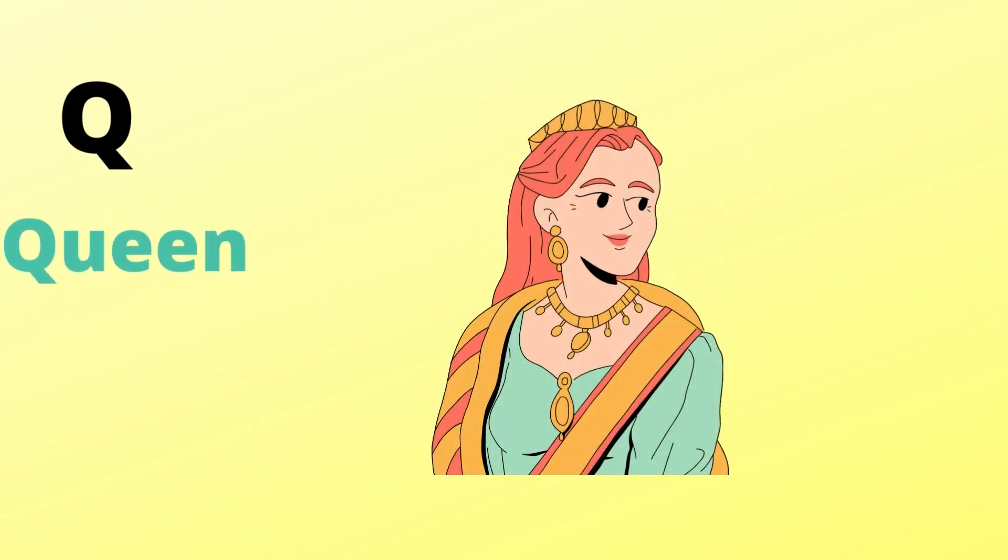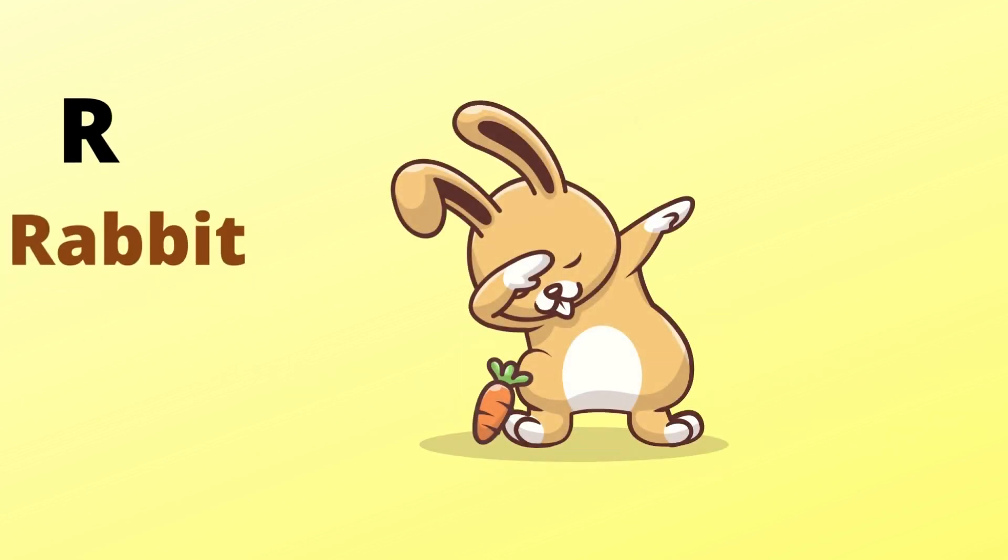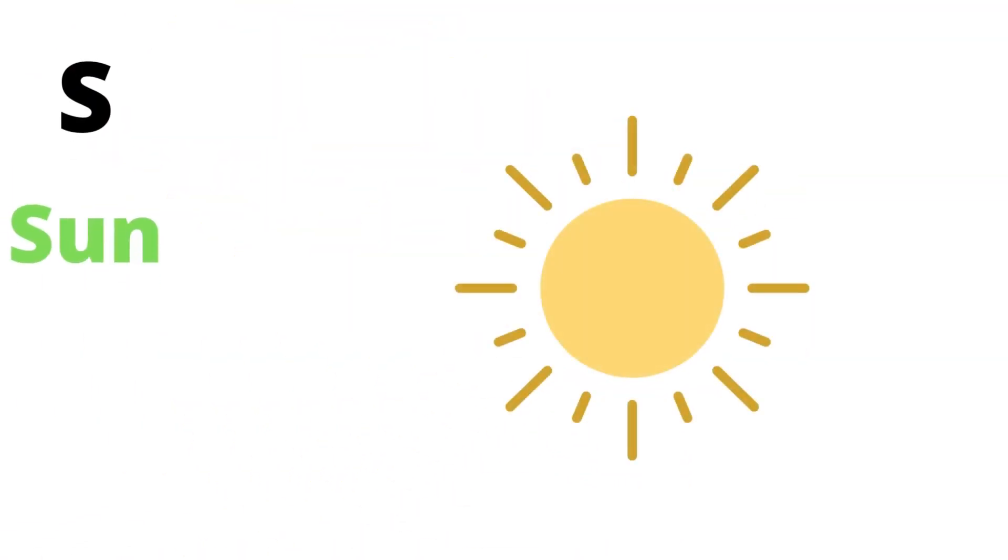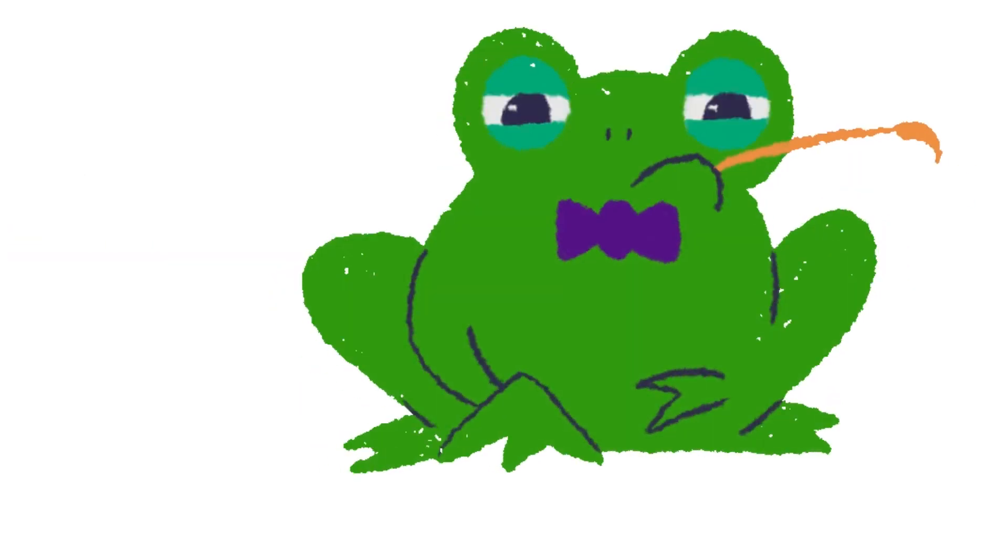Q is for queen, q-q-queen. R is for rabbit, r-r-rabbit. S is for sun, s-s-sun. T is for toad, t-t-toad.